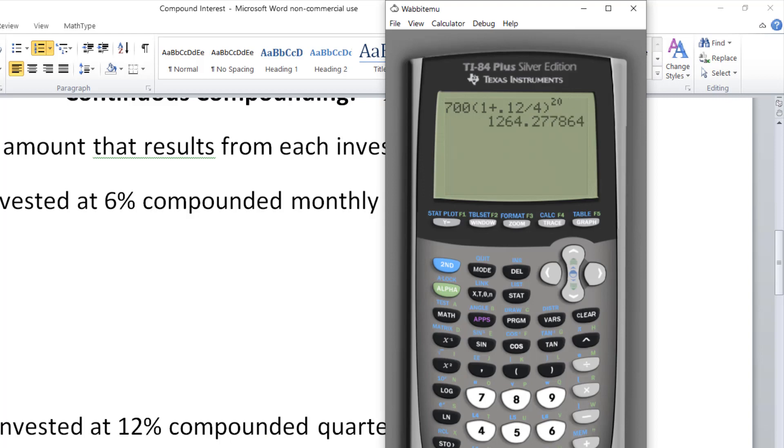1,264.28. Round that to two places, so it's $1,264.28.